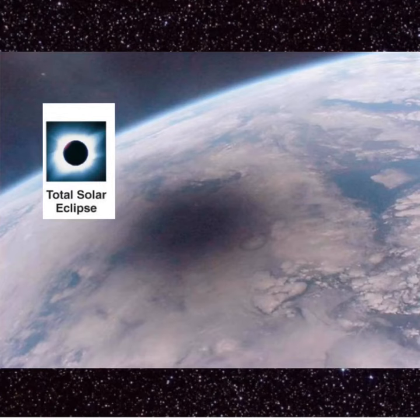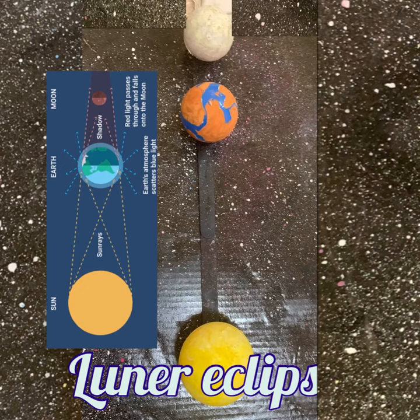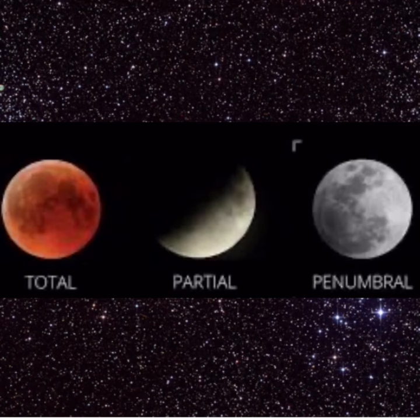Lunar eclipse. It also happens when the sun, moon, and earth are aligned and the earth is in the middle. It happens at full moon and it also has three types: total, partial, and penumbral.